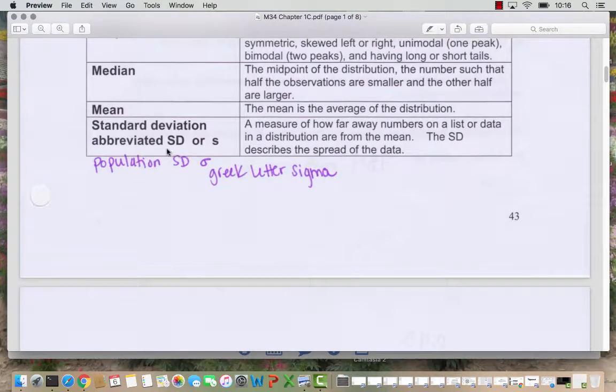The standard deviation, when we talk about a sample standard deviation, we use lowercase s. When we talk about a population standard deviation, we use sigma, this Greek letter. Sometimes you'll see I abbreviate it with sd for standard deviation. And that's going to describe the spread of the data.